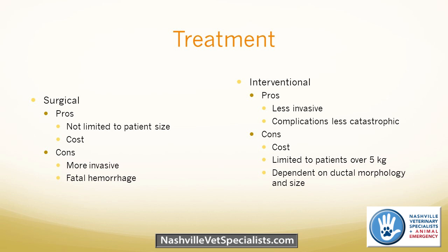Some cons to surgical closure are that it is more invasive — it requires a lateral thoracotomy versus just a small incision into a vessel. Young animals generally recover quite well, but it is more invasive surgery. The most important potential complication is fatal hemorrhage. The canine ductus is actually quite fragile, and when dissecting around it, if they accidentally tear or rupture the ductus, the animal can bleed out, which is usually fatal.